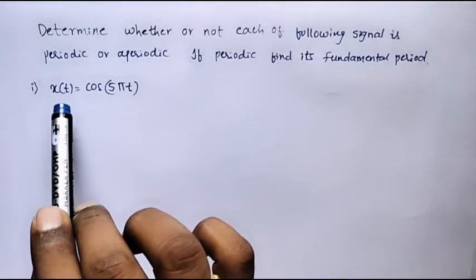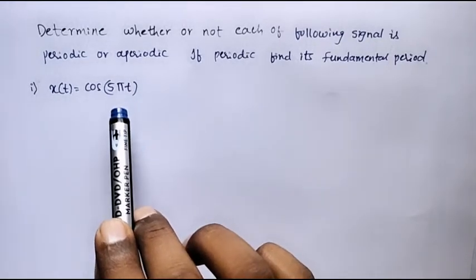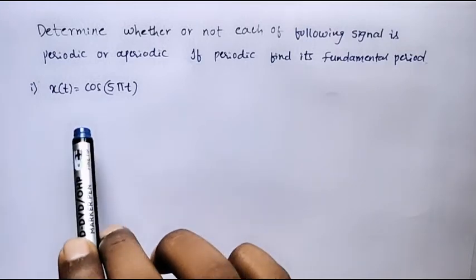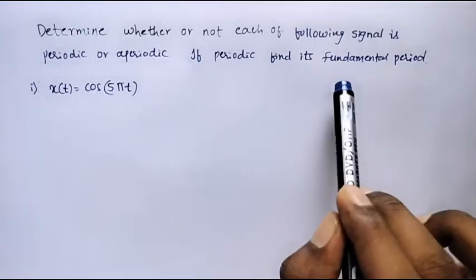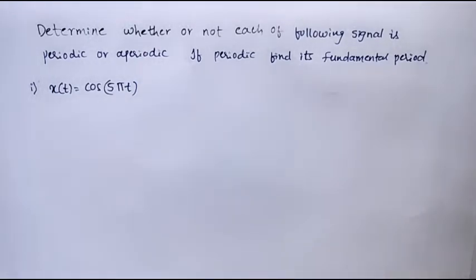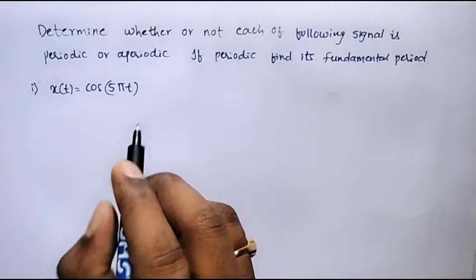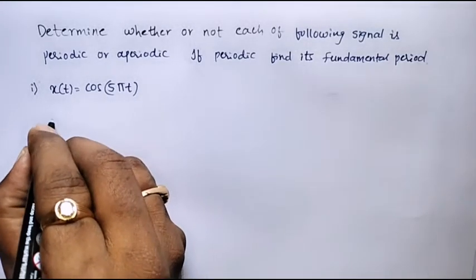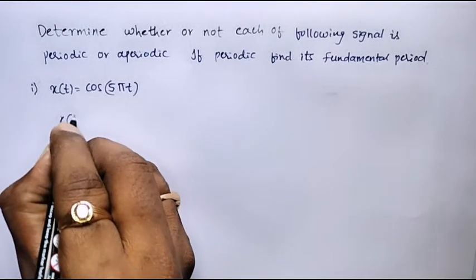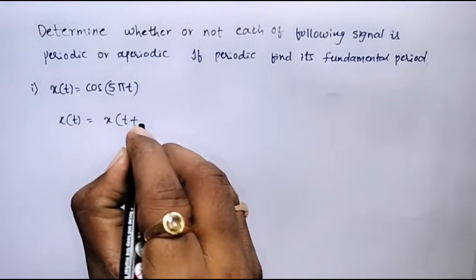The first signal given is x(t) = cos(πt). We are supposed to verify whether it is a periodic signal or aperiodic signal. If it is periodic, we are supposed to calculate the fundamental period also. Here x(t) = cos(πt). It is a continuous time signal, and we know that for a continuous time signal, the signal is periodic if it satisfies the condition x(t) = x(t + T).